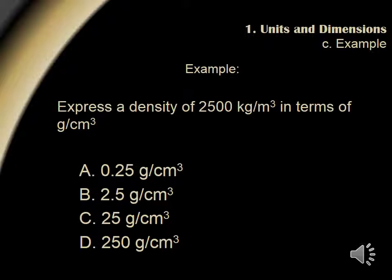We set 1 kilogram equal to 1000 grams. Next, let's convert cubic meters into cubic centimeters. We will set 1 meter cubed equal to 100 centimeters all cubed. Now let's rewrite 1000 grams as 1 times 10 to the third grams, and 100 centimeters as 1 times 10 to the second centimeters. Now when multiplying in scientific notation, we multiply the base and add the exponents. Across the top, this gives us 2.5 times 10 to the sixth.